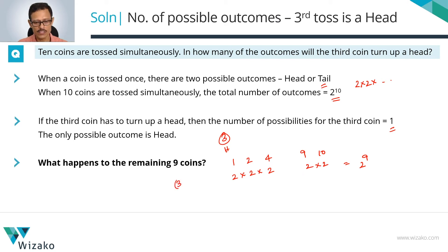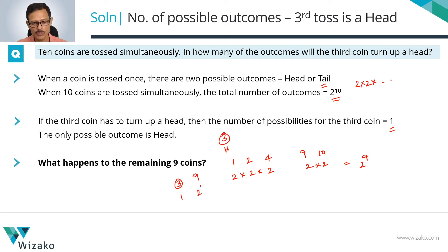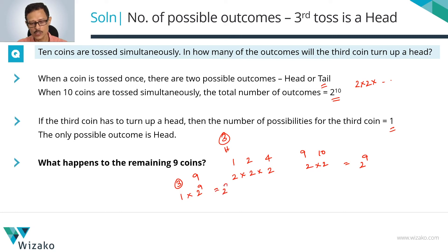The third coin turns out to be a head, so we have only one possible outcome for it. The remaining nine coins will have a total of 2 raised to the power of 9 outcomes. So the third coin turning out to be a head, with ten coins being tossed simultaneously, gives a total of 1 times 2 raised to the power of 9, or simply 2 raised to the power of 9 outcomes.